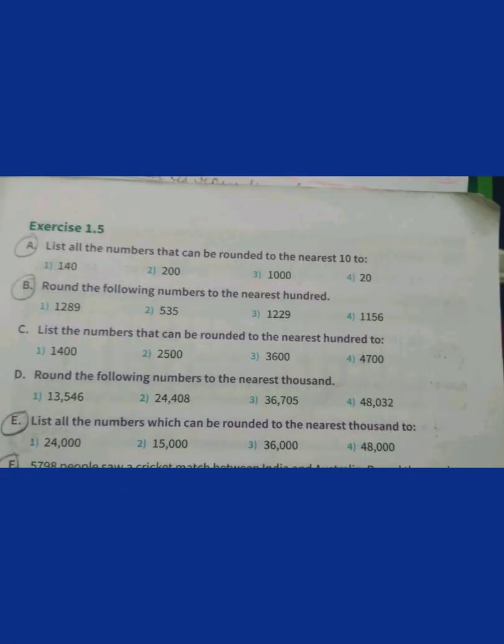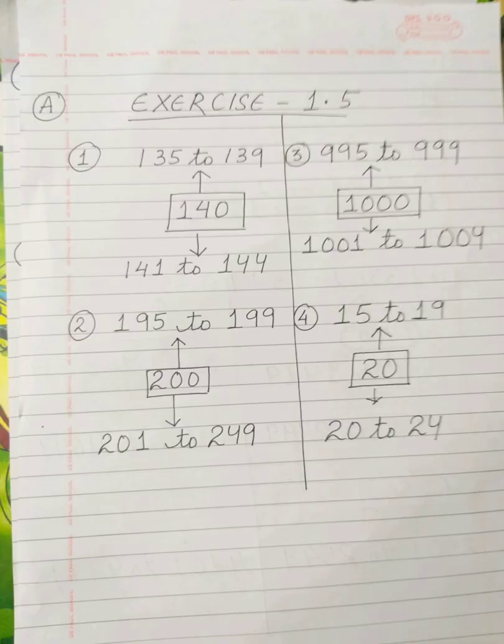Now let us go to exercise 1.5. List all the numbers that can be rounded to the nearest 10. We have to find all the numbers that can be rounded to the nearest 140, which is the tens place. The two limits are there for every number. So, 140 has a lower limit of 135 to 139 and an upper limit of 141 to 144 that can be rounded to 140. Similarly, question numbers 3 and 4 can be done.